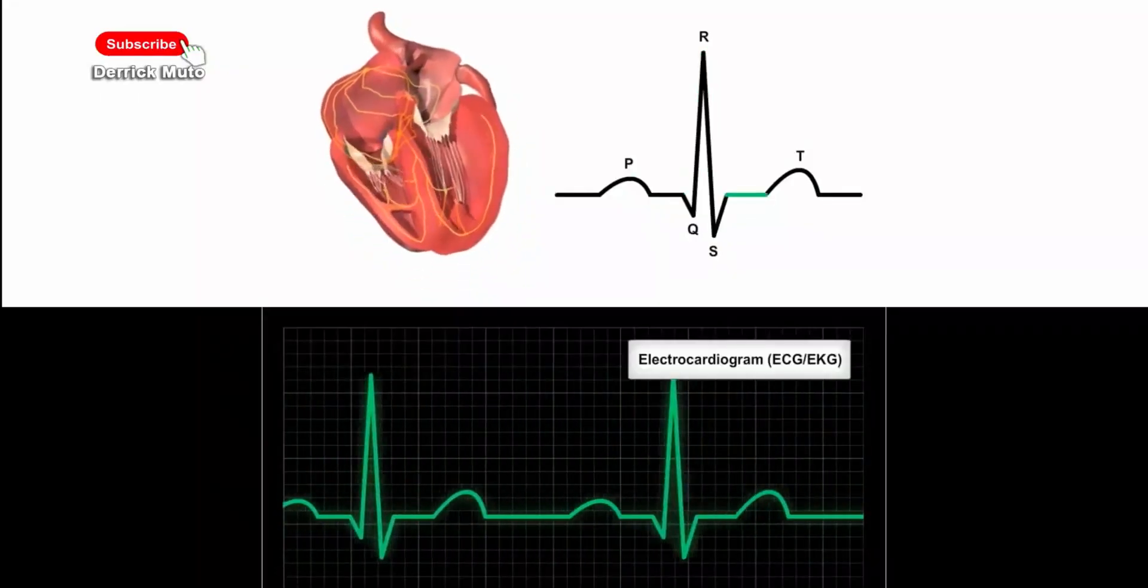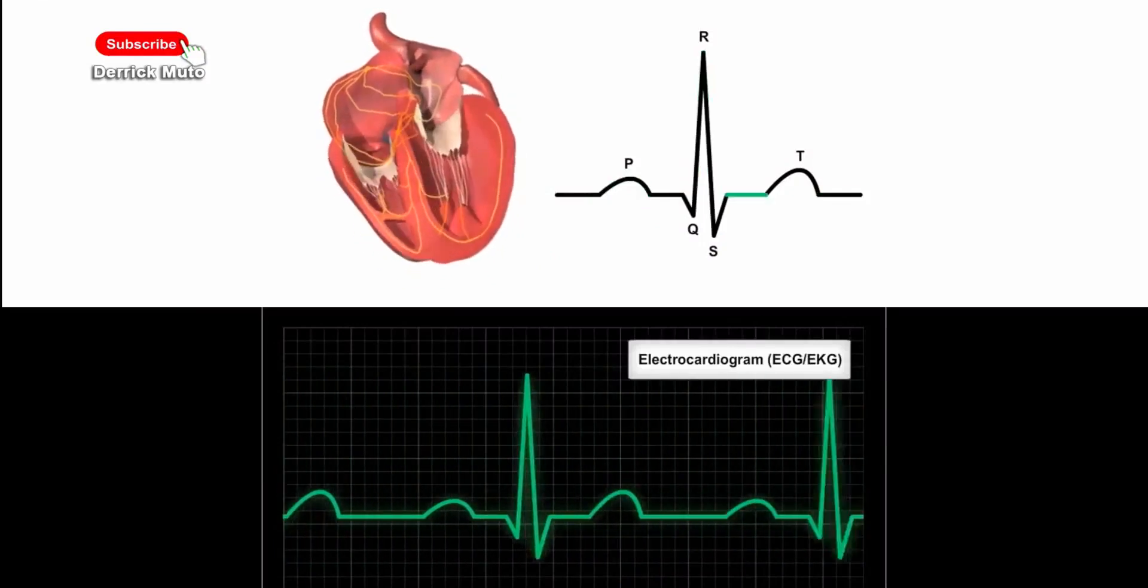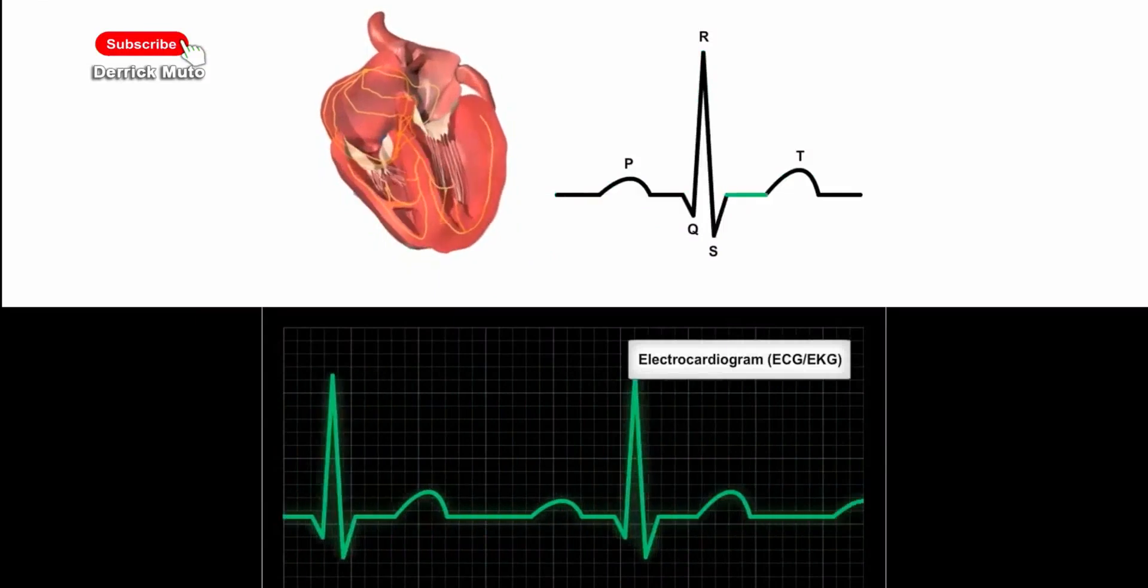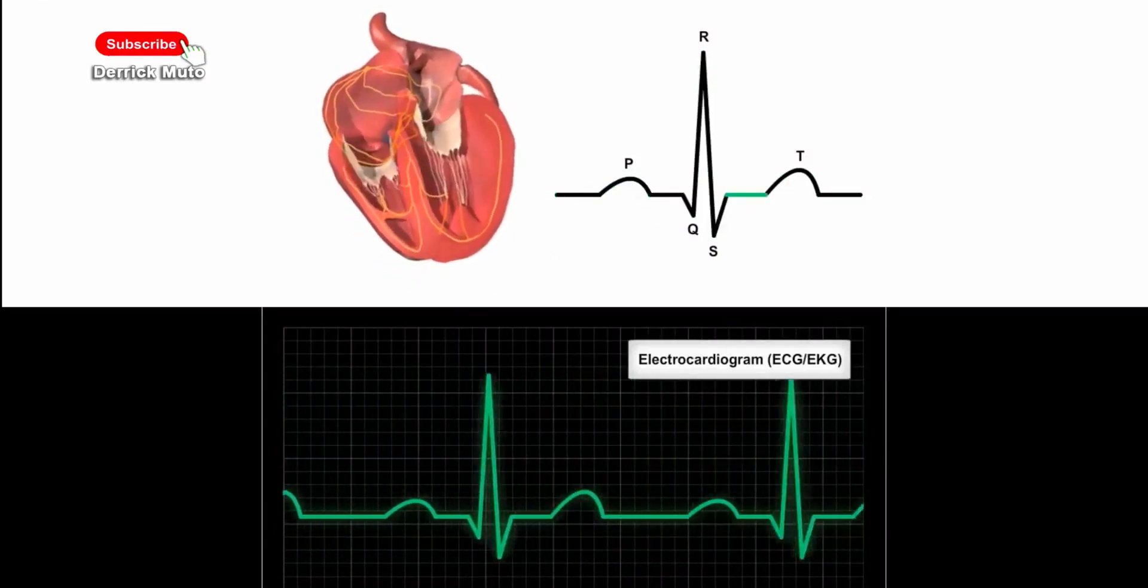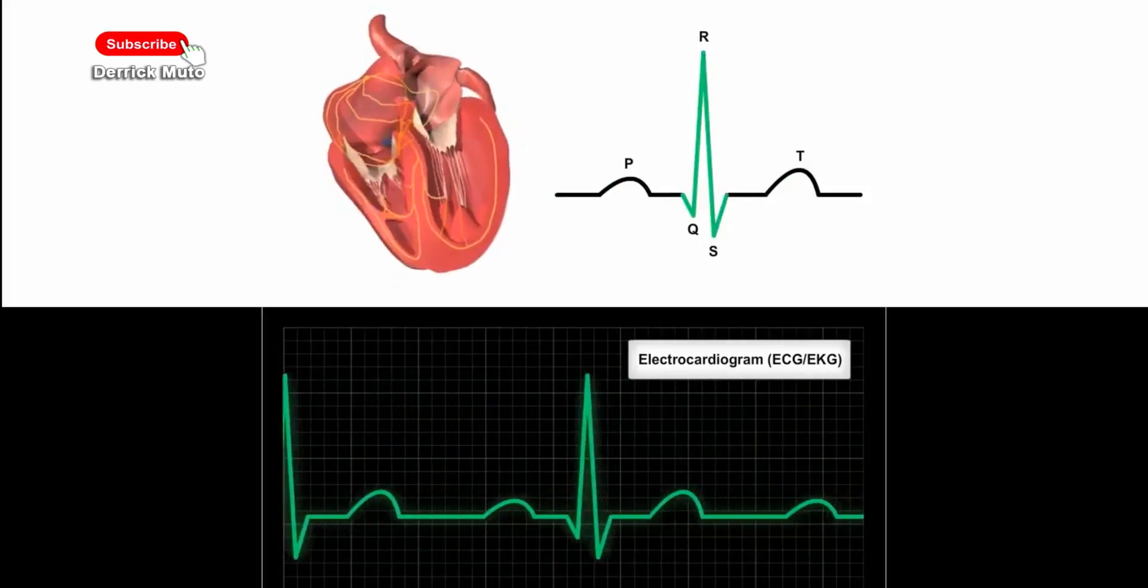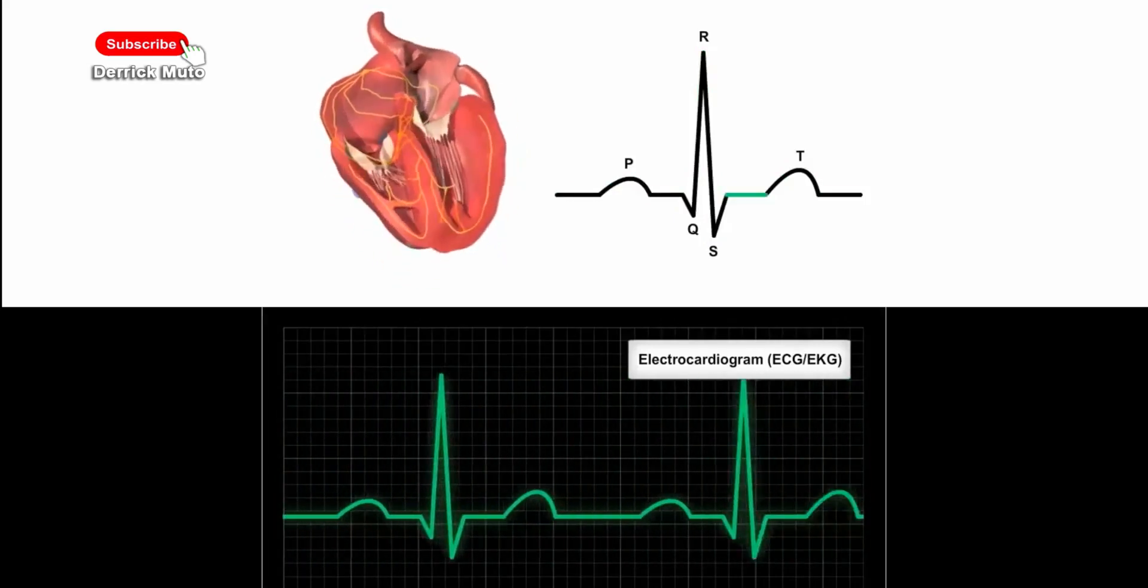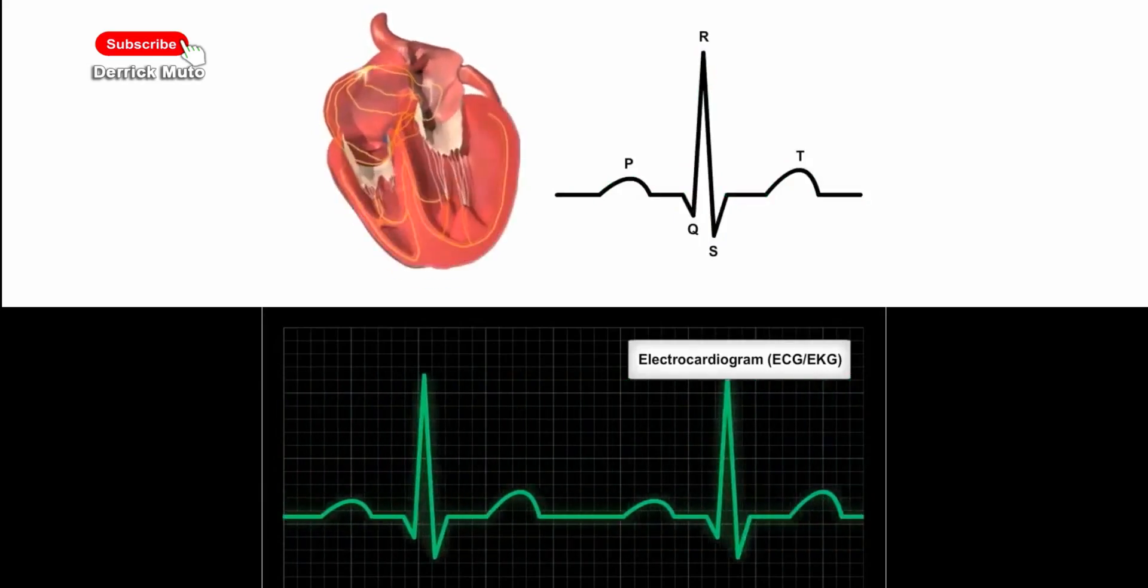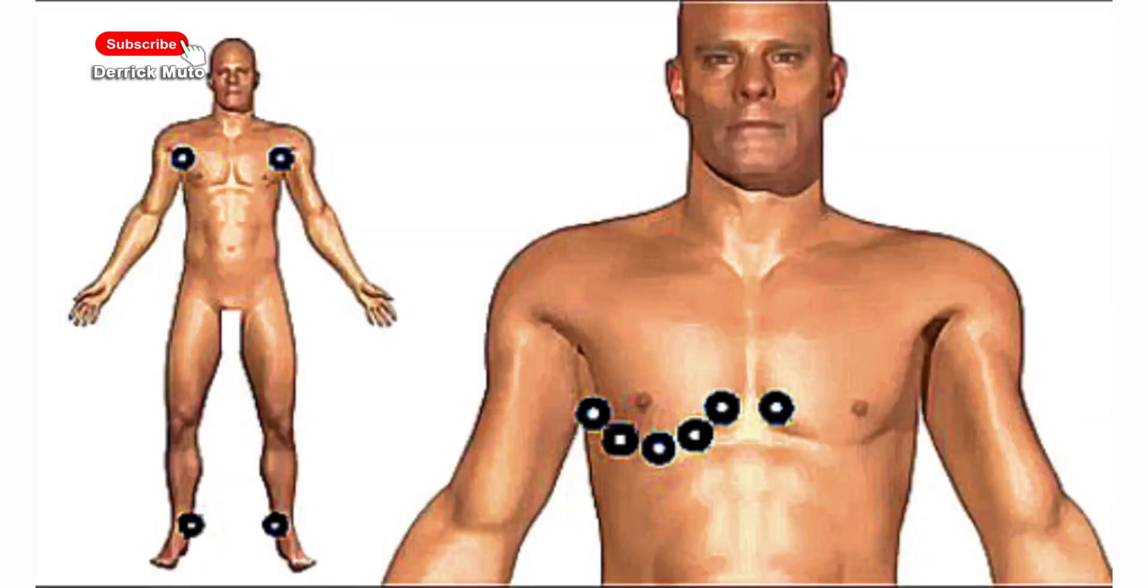Electrocardiography is the process of producing an electrocardiogram, abbreviated as ECG or EKG. An electrocardiogram is simply a graph of voltage versus time of the electrical activity of the heart using electrodes placed at certain spots of the chest, arms, and legs on the skin.